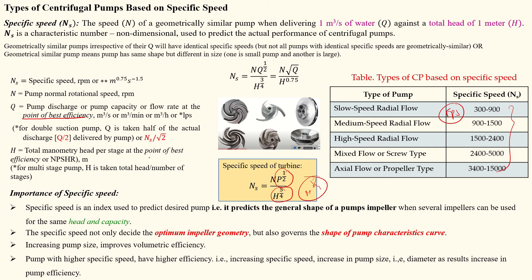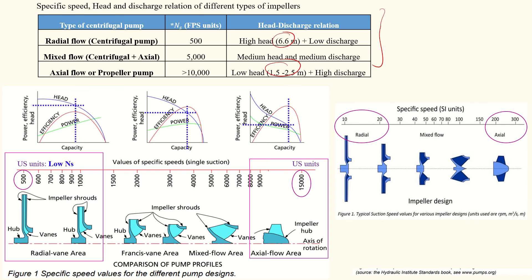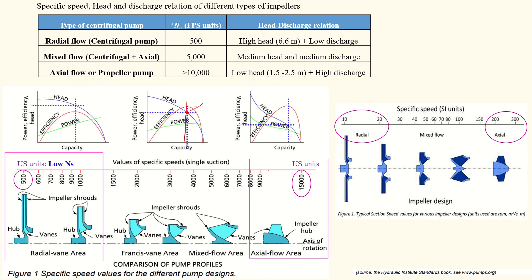Q and H must both be calculated at the best efficiency point (BEP). Looking at the head-discharge curve: as Q increases, head drops. At peak efficiency, there is a corresponding head value — this defines the best operating point. For axial and mixed flow pumps, as head reduces and efficiency increases, that lowest head at peak efficiency point is the best operating point.